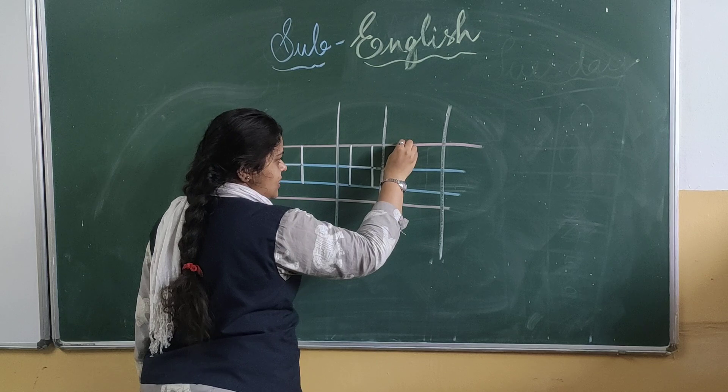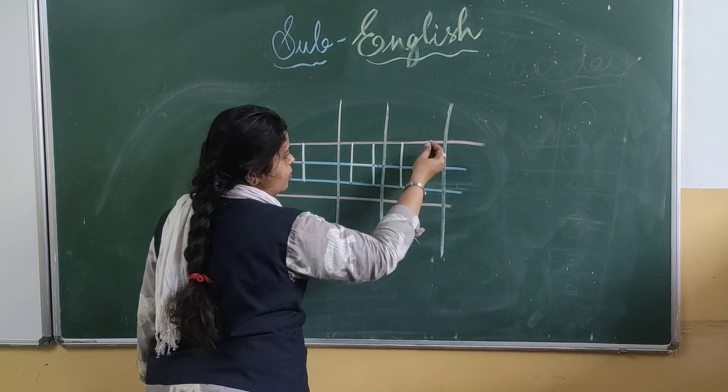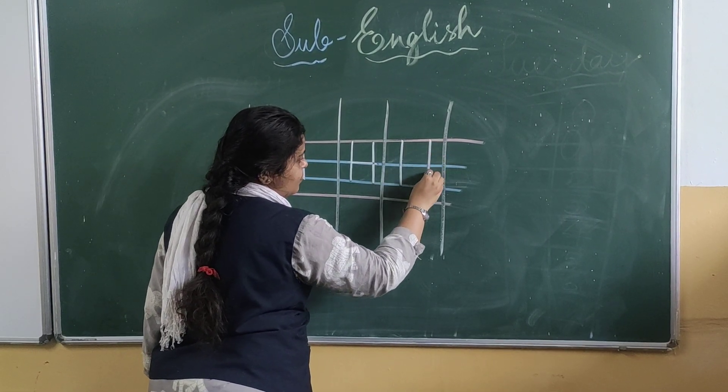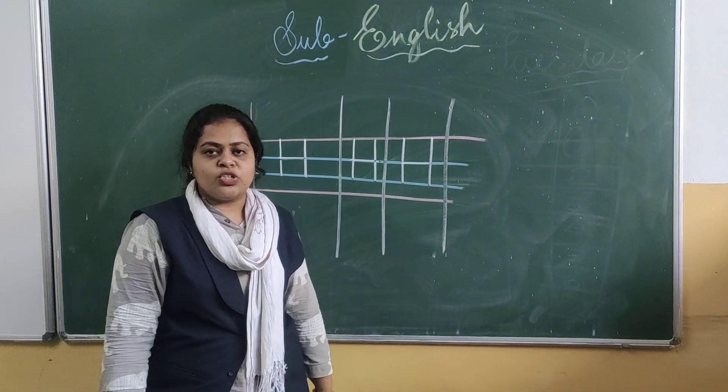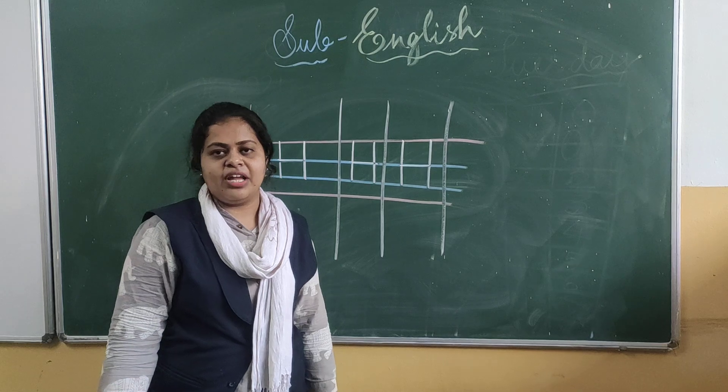Once again children, draw the standing line from top red line to bottom blue line and one more standing line from top red line to bottom blue line and draw the sleeping line on the top blue line. This is how we need to write the letter H.